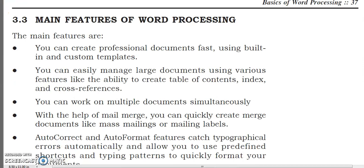The main features of word processing are: first, you can create professional documents fast using built-in and custom templates. Second, you can easily manage large documents using features like the ability to create a table of contents, index, and cross-references. Third, you can work on multiple documents simultaneously. Fourth, with the help of mail merge you can quickly create merged documents like mass mailing labels.